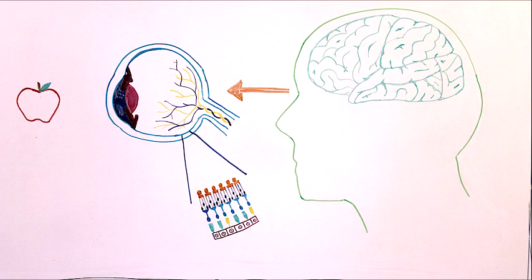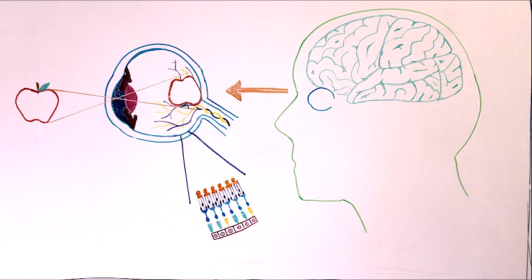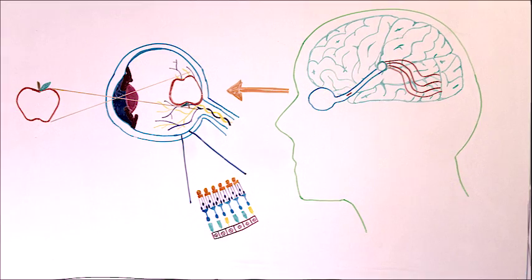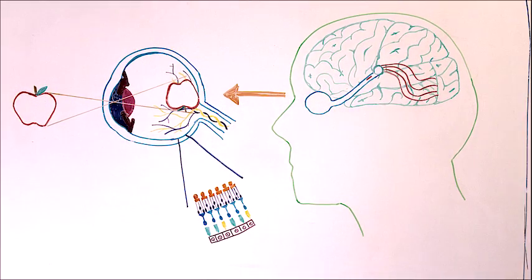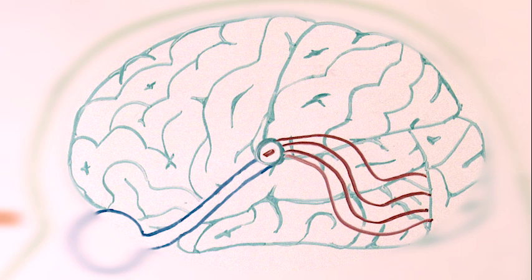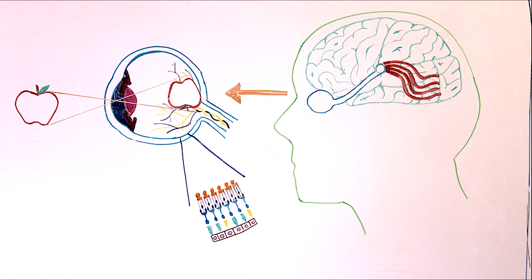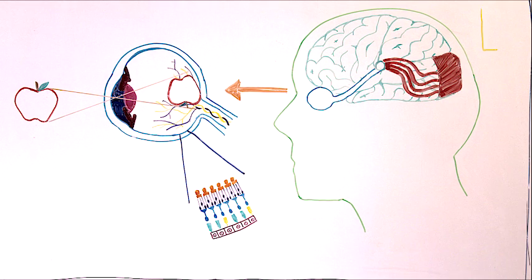But when we look at a red apple, we cannot recognize the object until those neural impulses are processed and pieced together to form an image in the brain. The optic nerve, comprised of ganglion cells, is the structure that transports visual impulses to the lateral geniculate nucleus, the visual relay system of the brain. This region distributes the impulses through visual pathways where they can travel to the occipital lobe, the visual processing region of the brain.